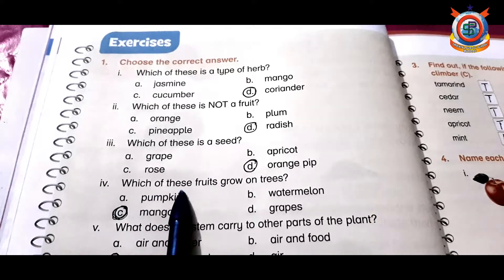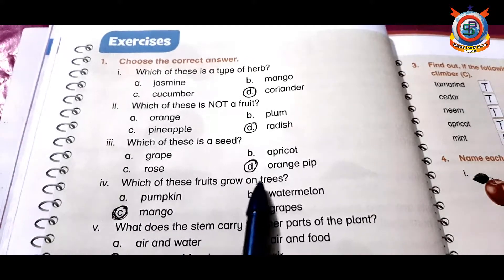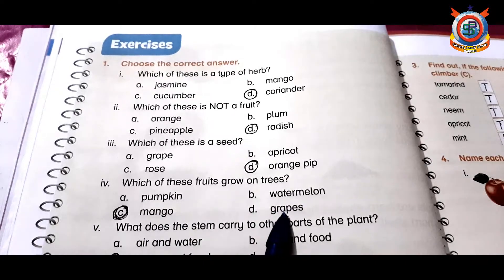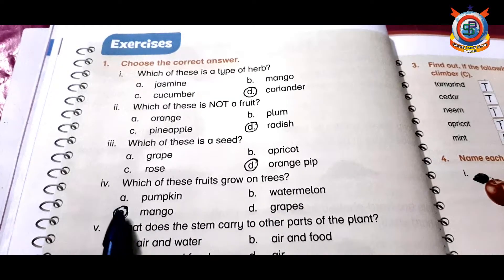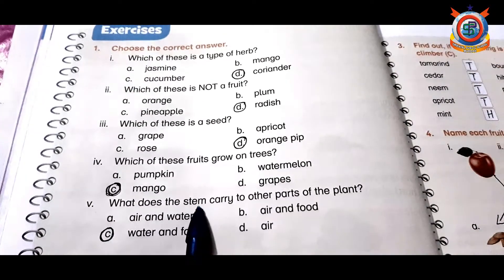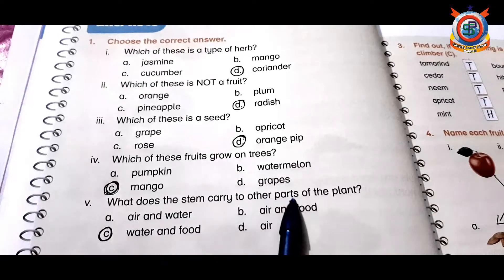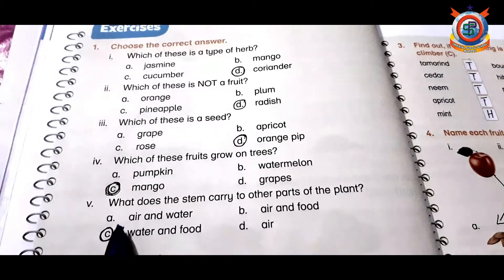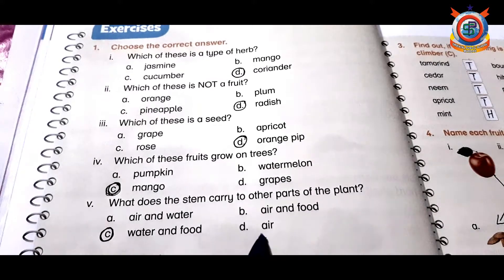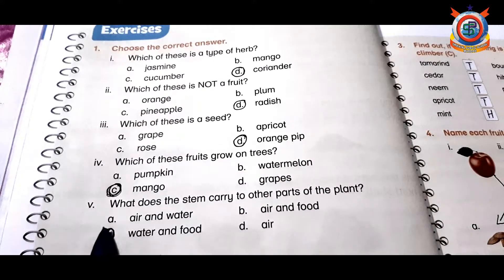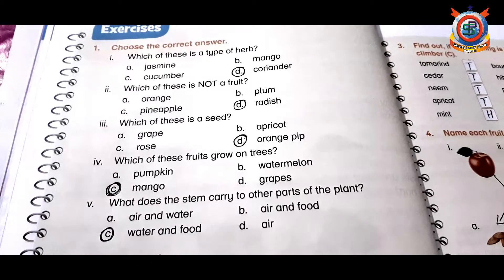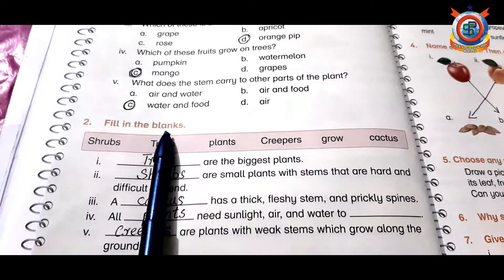Four: which of these fruits grow on trees? Pumpkin, watermelon, mango, grapes. The correct option is mango. Fifth one is: what does the stem carry to other parts of the plant? Air and water, air and food, water and food, and air. The correct option is water and food.